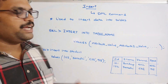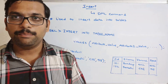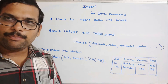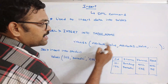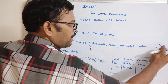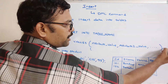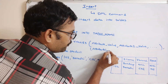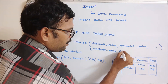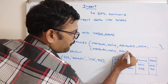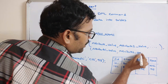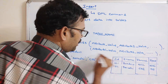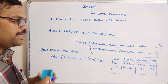Now, what is the syntax for inserting multiple rows at a time? The previous syntax inserts only one row. To insert multiple rows, without terminating the query, use a comma and provide the second row's values in parentheses, then another comma for a third row, and so on.